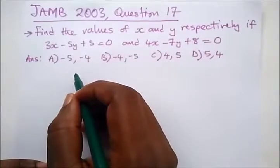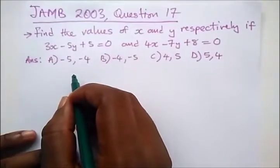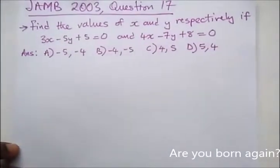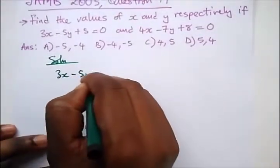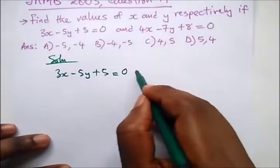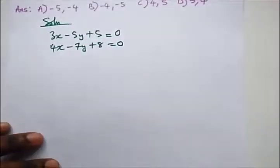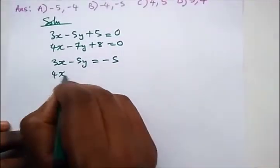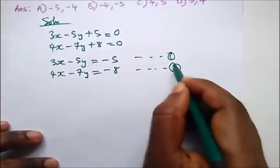Here we have a JAMB question from 2013, question 17. It says find the values of x and y respectively if 3x minus 5y plus 5 equals 0, and 4x minus 7y plus 8 equals 0. Let's write this down and simplify: we have 3x minus 5y equals minus 5 as equation 1, and 4x minus 7y equals minus 8 as equation 2.